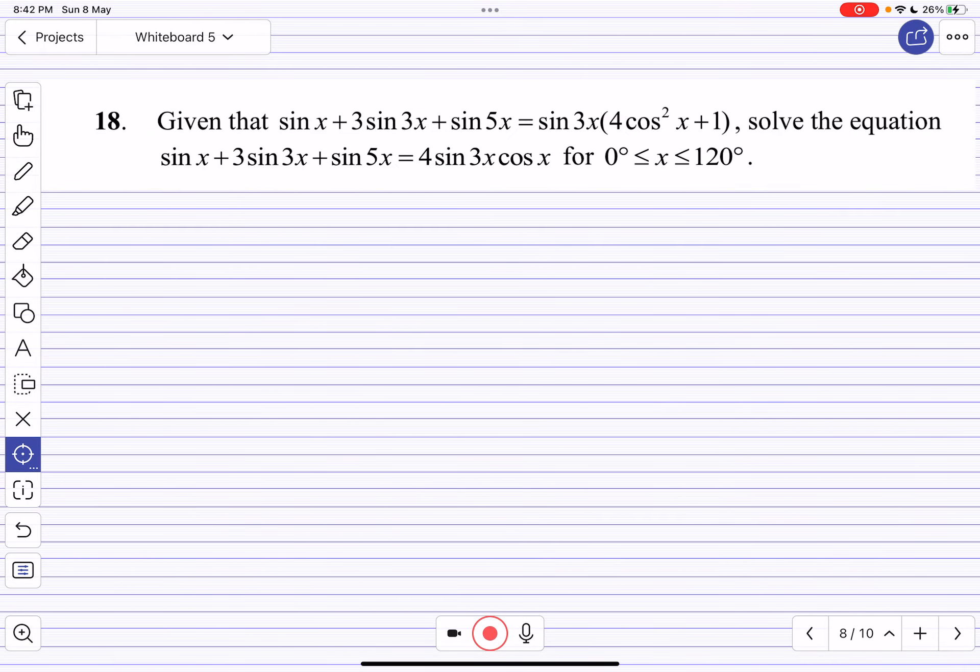Given that sin x + sin 3x + sin 5x = sin 3x(4cos²x + 1), we want to solve this equation. The first thing I'll look for is whether the left and right sides are related.